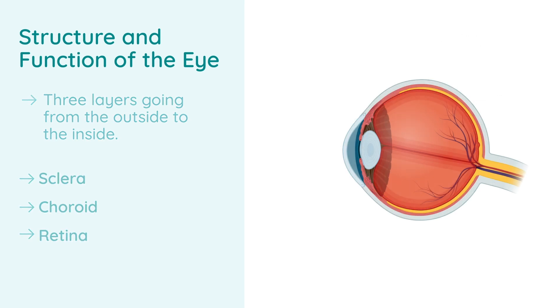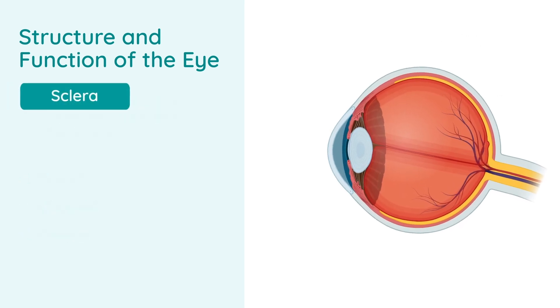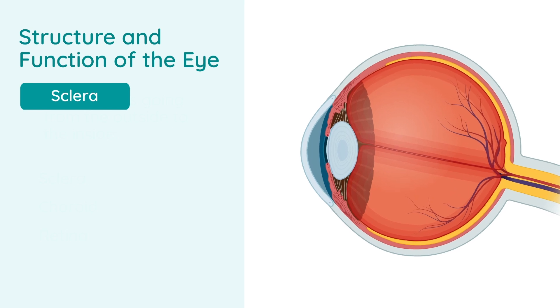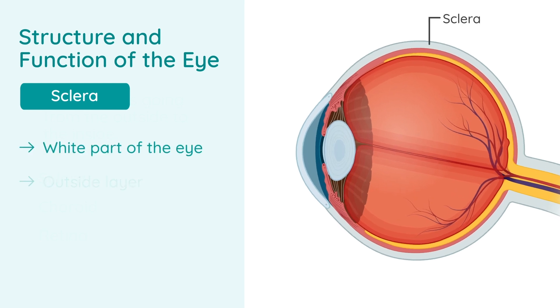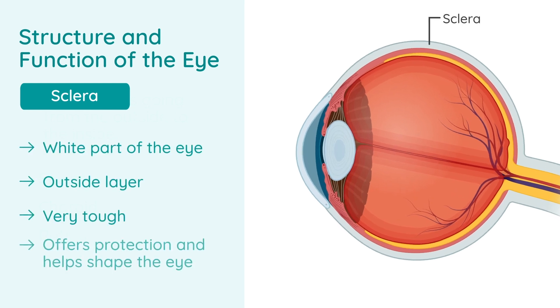Starting with the sclera, this is the white part of the eye. It's the outside layer. It's very tough, and it offers protection and helps shape the eye.